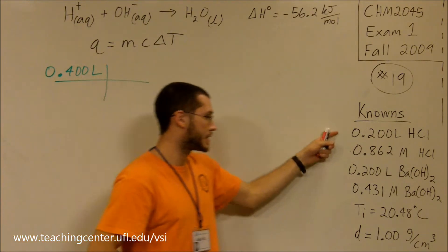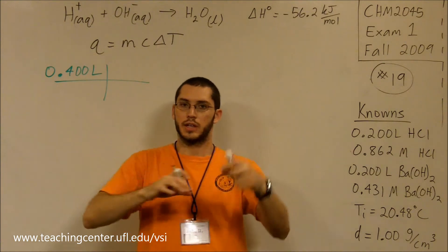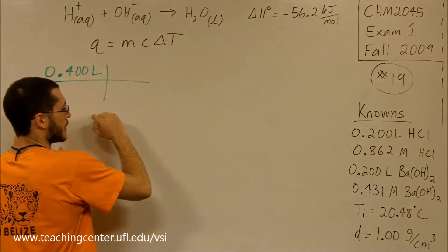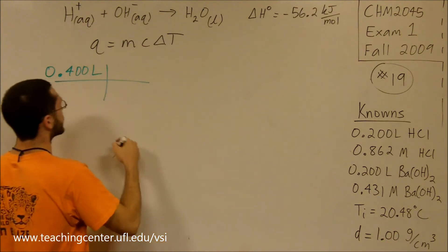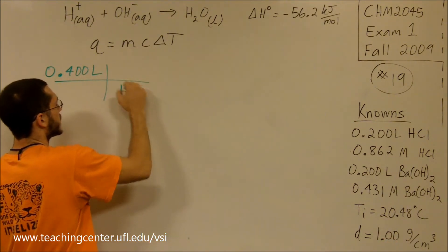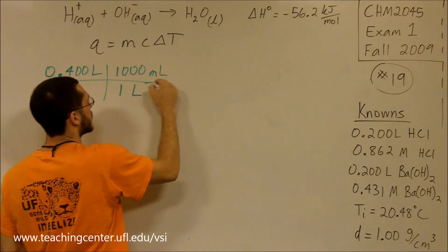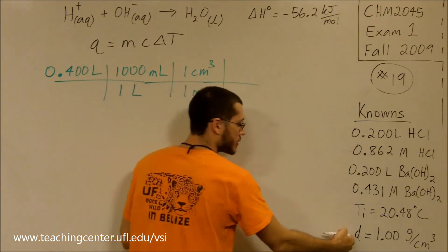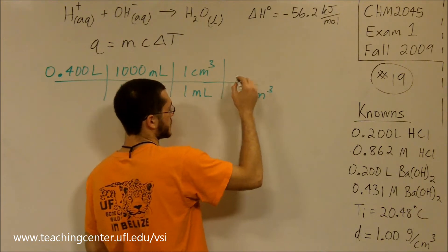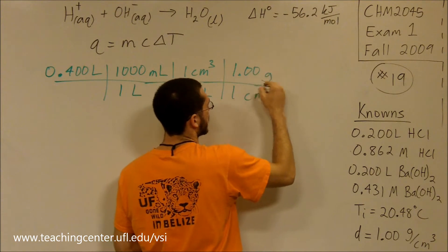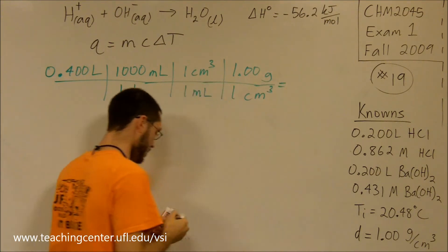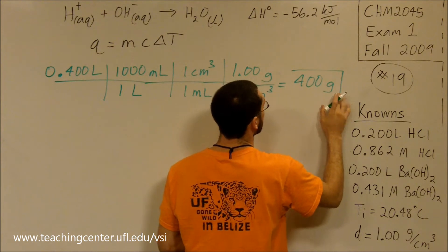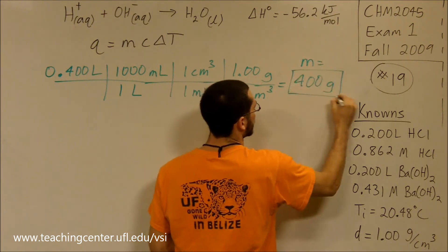We're adding these two volumes up because we have to pour the chemicals together to react and release all that heat. My density is given in cubic centimeters, so I need to convert these liters. One liter gives me a thousand mL. One mL equals one cubic centimeter. Using the density, one cubic centimeter is one gram. This is the mass of the solution. It comes out to be 400 grams.